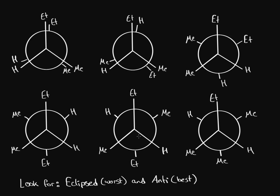The best interaction is called an anti-interaction, where the two groups are exactly 180 degrees apart from each other — that way they have the least amount of interaction possible. We're also going to look for a third thing called the gauche interaction, which is just a 60-degree angle interaction, which is what we see normally between any groups. So to start off, we're going to look for any molecules that have eclipsed interactions.